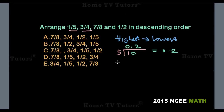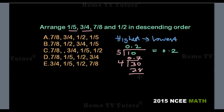Coming to the next fraction, 3 over 4, we divide 3 by 4. Not possible, so we add 0 and a decimal point. 4 into 30 goes 7 times. 7 times 4 is 28. 30 minus 28 leaves 2. Since we have the decimal point, we can add 0 whenever needed. 4 into 20 gives us 5. 5 times 4 is 20, nothing left. So 3 over 4 equals 0.75.